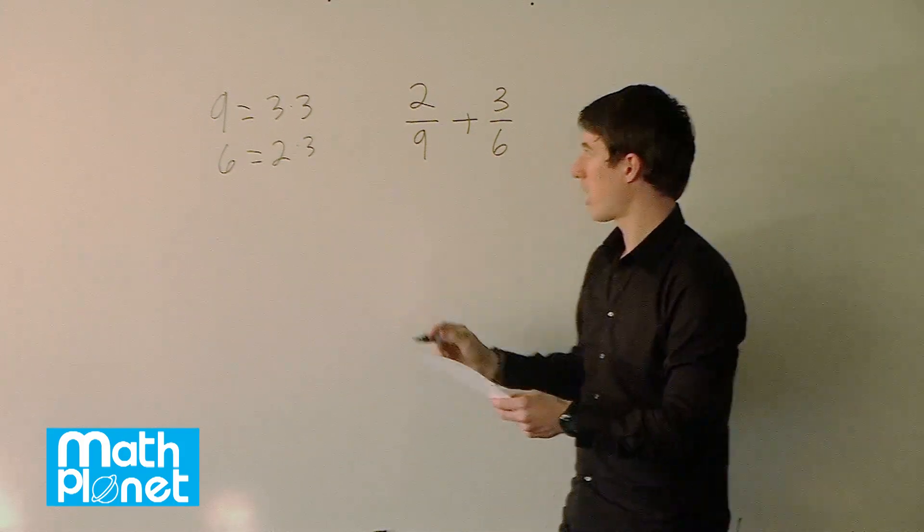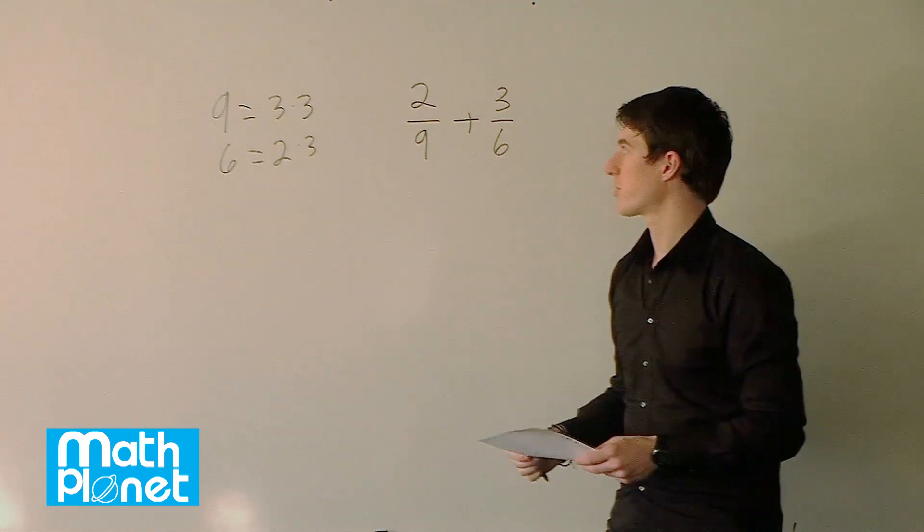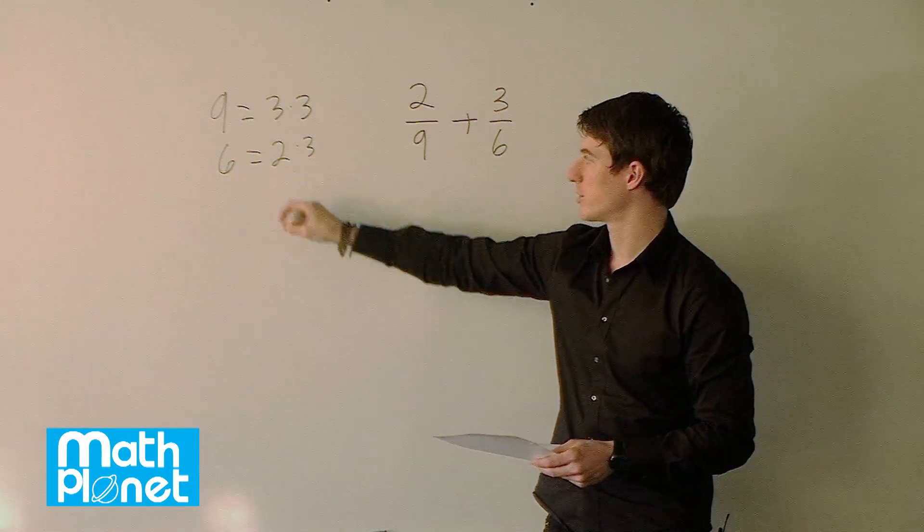So we can see that the common factor here or the lowest common factor is going to be 3 times 2 times 3 so that's 18. So 3 times 3 is 9 and then we have this term here 2 so that's 18.